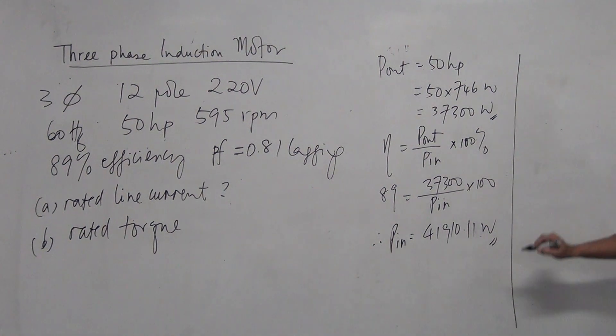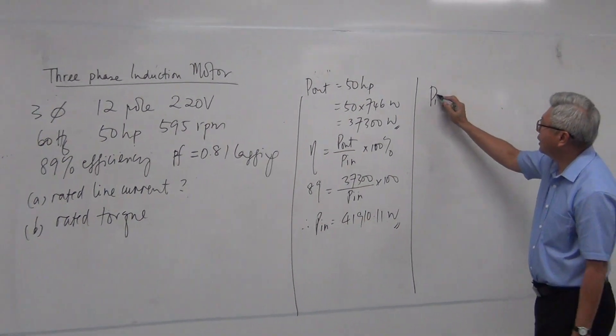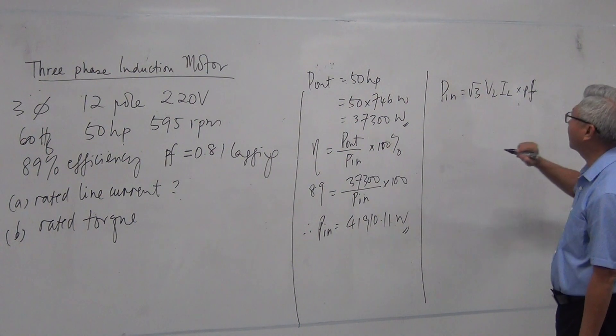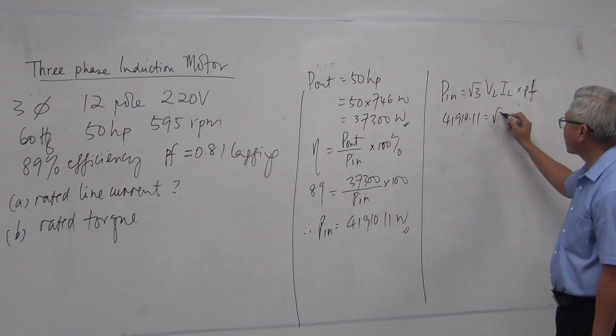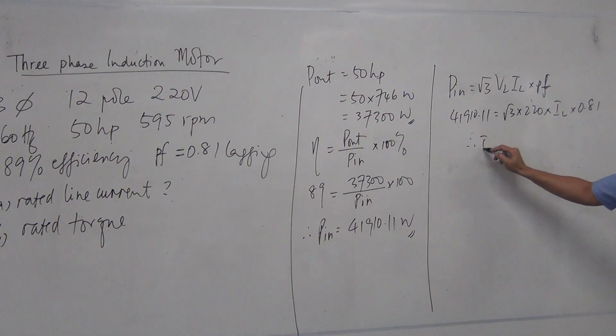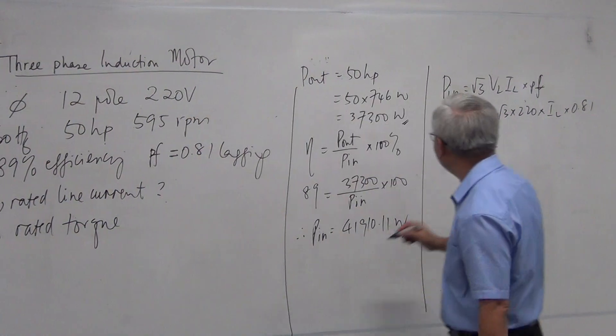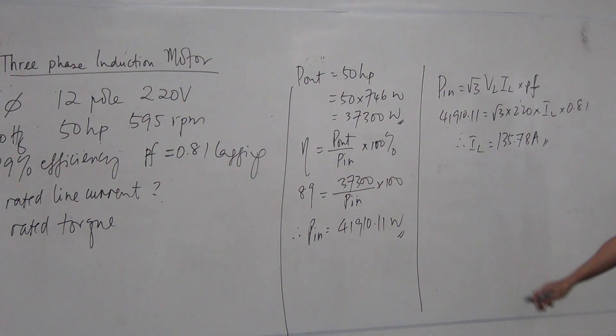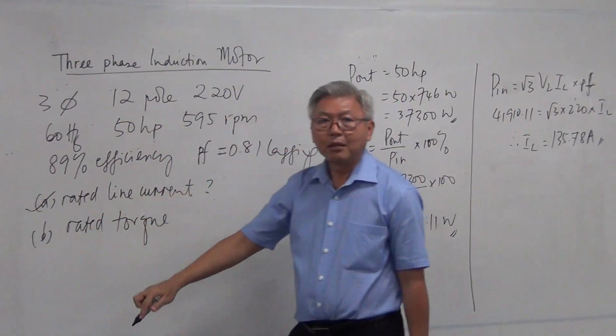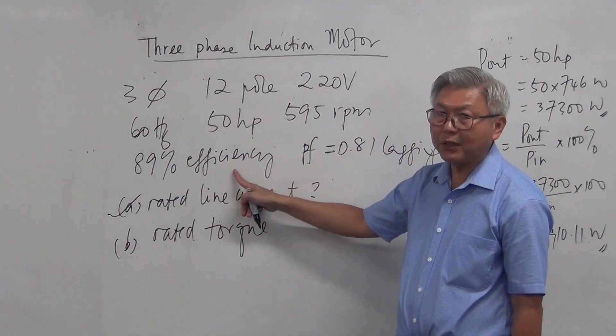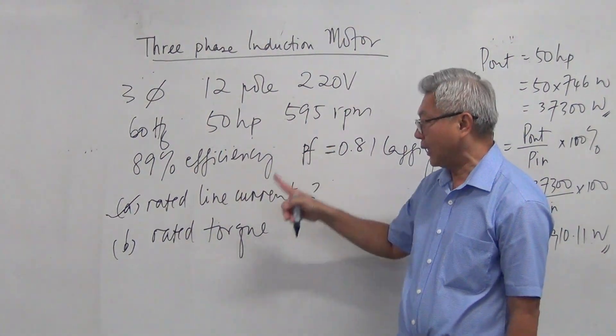Then I move on to find my current. Pe is equal to square root 3 times Vl times Il times power factor. So there is 41,910.11 equals square root 3 times 220. Il is unknown. Power factor is given 0.81. So therefore, line current can be found. And the answer is line current is 135.78 ampere. So that is part A. That's how you find the rated line current. Make use of the efficiency. I have the output power. I get the input power. After getting the input power, input power is equal to square root 3 Vl Il times cosine theta. I find my line current.